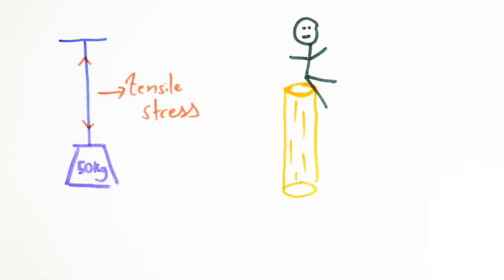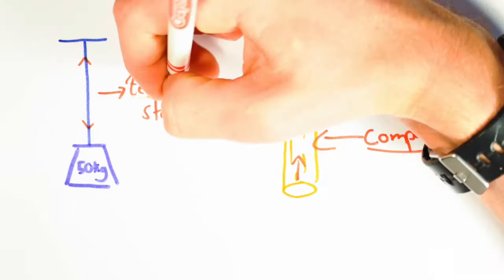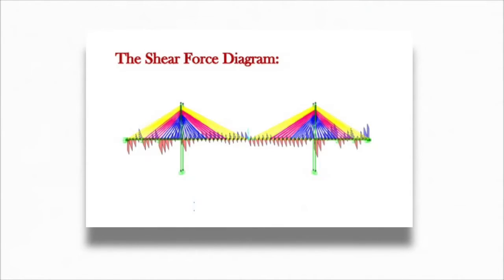When referring to stresses, materials can experience different types. Forces pulling on a member will cause tensile stress. Forces pushing on a member will result in compression stress. And when both forces push and pull on a member and the lines of forces are not directly across from each other, a shear force is produced.